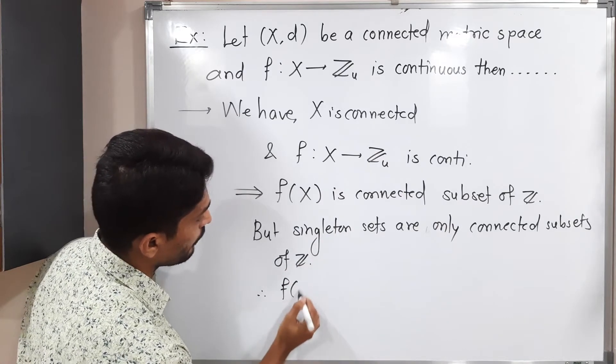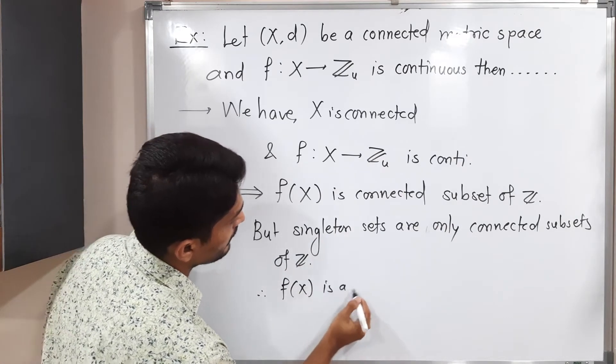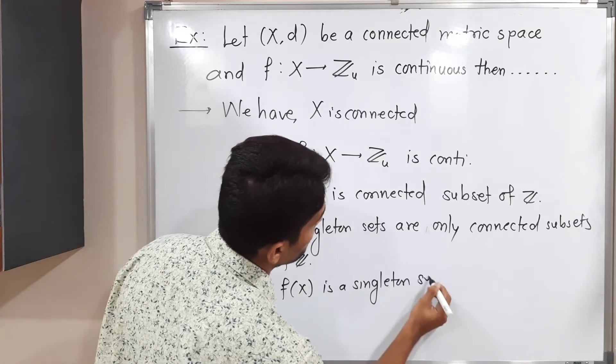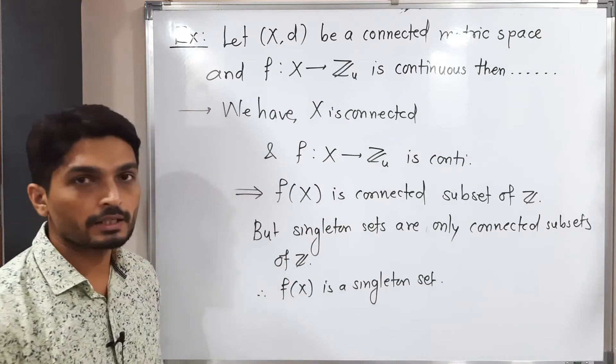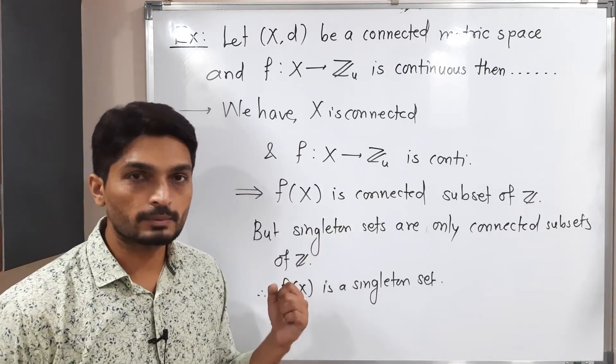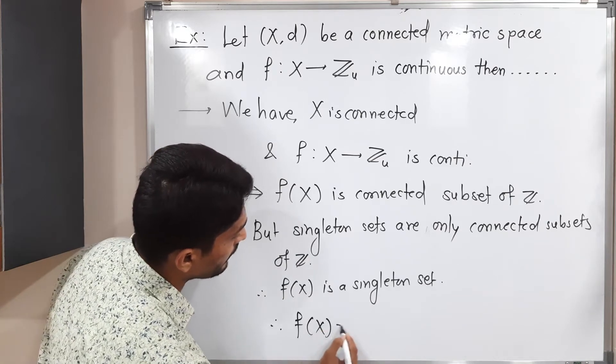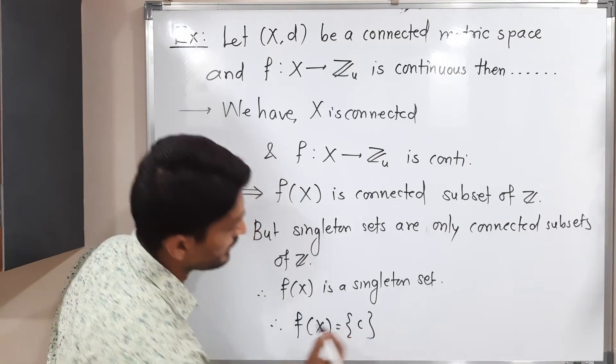Therefore f of X is a singleton set. Since it is a connected subset of Z and singleton sets are only connected subset, therefore f of X is a singleton set. Therefore, f of X will be a single element c.